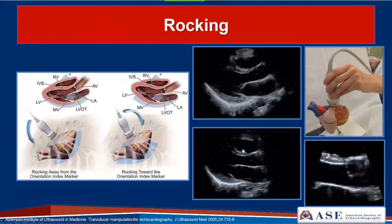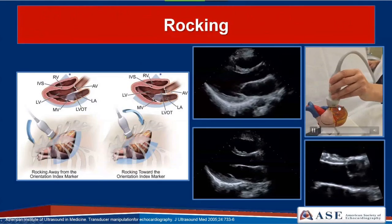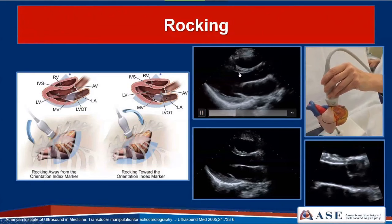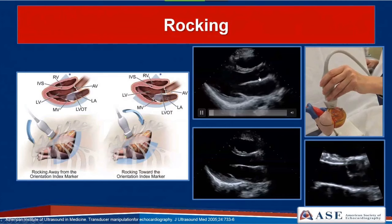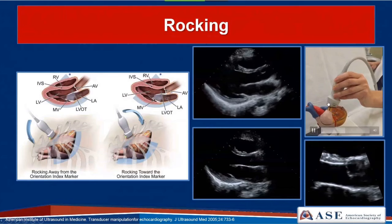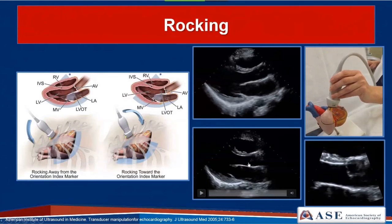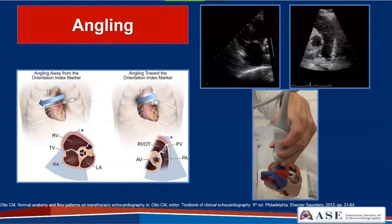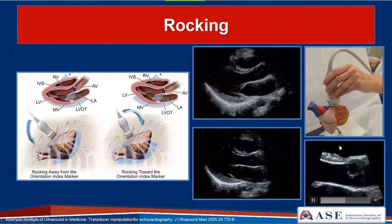The next maneuver is rocking—a small maneuver used to center a structure. This is routinely done when imaging in the parasternal long-axis view. Starting with a long-axis view showing the left ventricle, if we want to bring the LVOT and aortic valve slightly more horizontal, we rock towards the index marker, then away and back. In doing so, we bring the LVOT and aortic valve more horizontal and more perpendicular, allowing for an easier and more accurate measurement of the LVOT and aortic annulus.